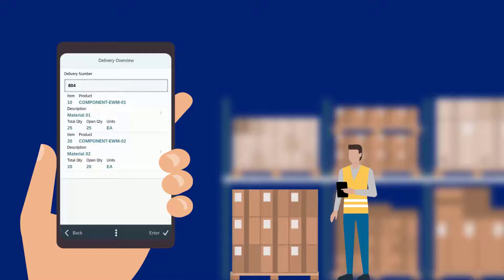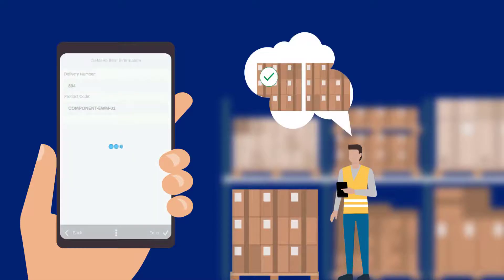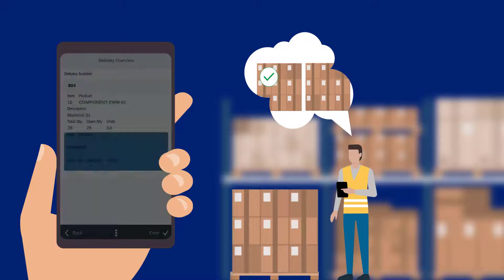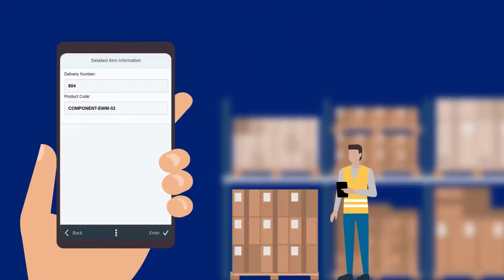They can now see an overview of all the items contained in the delivery. To avoid any mistakes, they decide to double check if the correct product has arrived. This is done by clicking on the delivery item to see an image of the item.